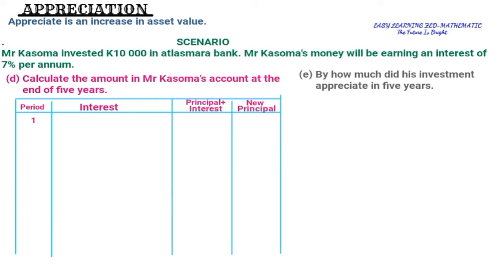Year 1: Mr. Kasoma invested 10,000 at seven percent. The interest was 700 — which is what we calculated in Question A. Adding: 10,000 + 700 = 10,700. So the new principal for the second year is 10,700.